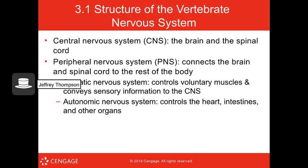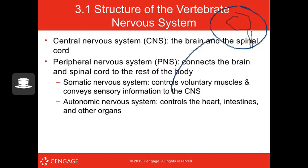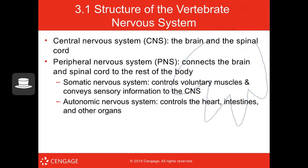Let's talk about the vertebrate nervous system. You are a vertebrate — look to your left, look to your right, you are surrounded by vertebrates. The nervous system can be broken up into the central nervous system, which consists of your brain and your spinal cord. Then we have the peripheral nervous system, which is basically everything else. That peripheral nervous system contains the somatic and autonomic nervous systems. The somatic nervous system controls voluntary muscle movement and conveys sensory information to the CNS. The autonomic nervous system controls your heart, intestines, and other organs.